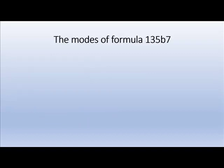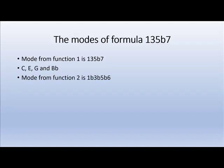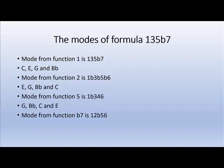So what are the modes of a random formula, like 1, 3, 5, flat 7? Well mode from function 1 is just the same. Starting from C you get E, G and B flat. And mode from function 2 is 1, flat 3, flat 5, flat 6. And then you start from E and go up. Mode from function 5 is 1, flat 3, 4, 6. Then you start from G. And from function flat 7 is 1, 2, flat 5, 6. And as you see it just starts from B flat.